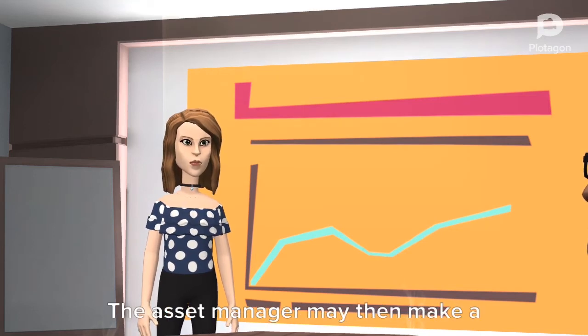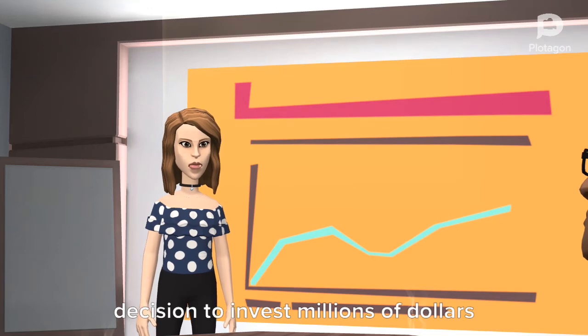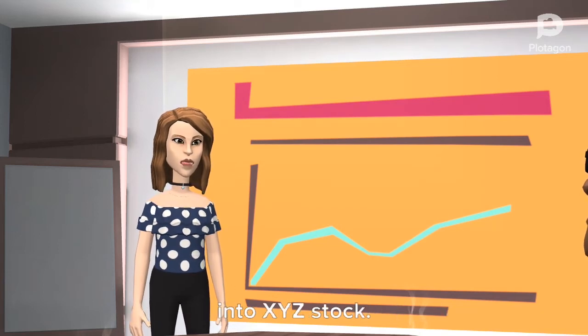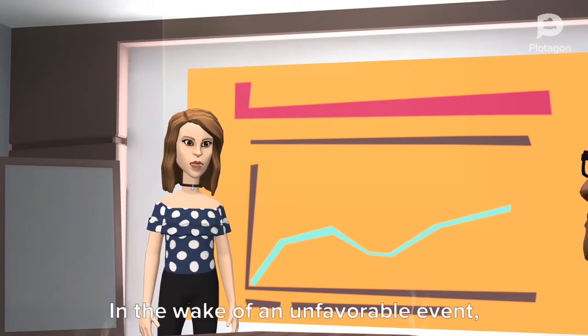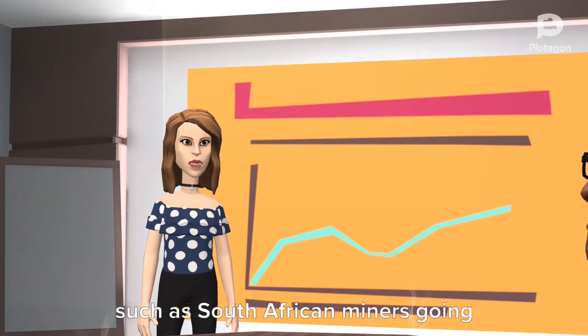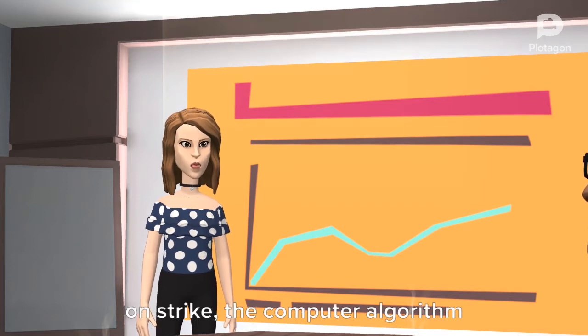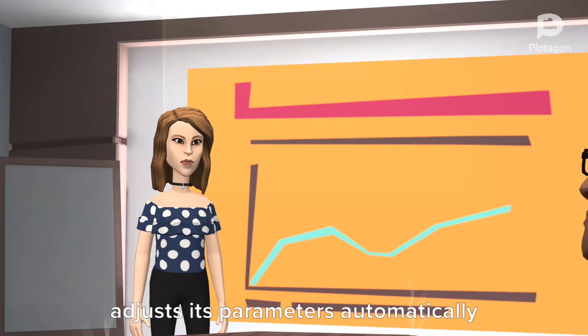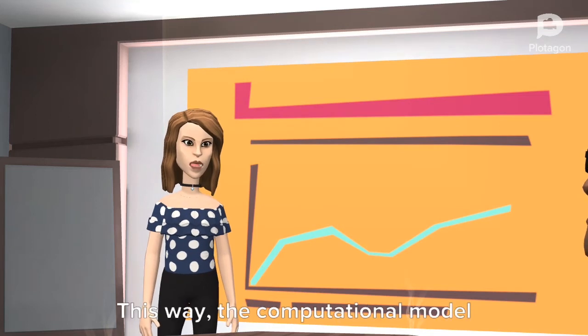The asset manager may then make a decision to invest millions of dollars into XYZ stock. In the wake of an unfavorable event, such as South African miners going on strike, the computer algorithm adjusts its parameters automatically to create a new pattern.